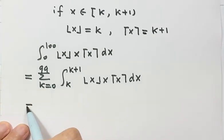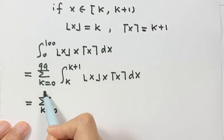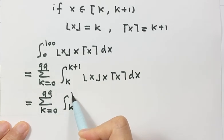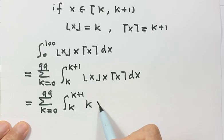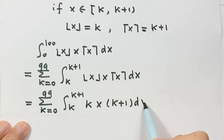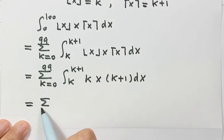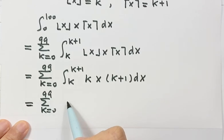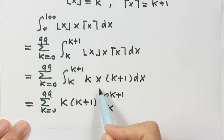For each integral, we can easily figure out the floor function and the ceiling function. For this integral, the floor is just k, then times x, then the ceiling is just the upper limit, k+1, dx. We can take k and k+1 outside the integral, giving us the sum from k=0 to 99 of k times k+1.